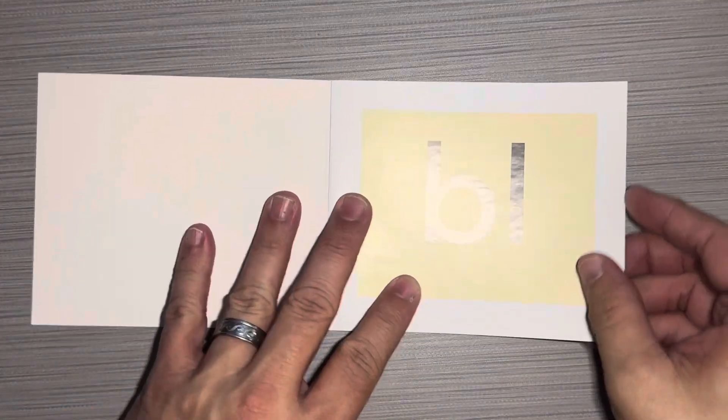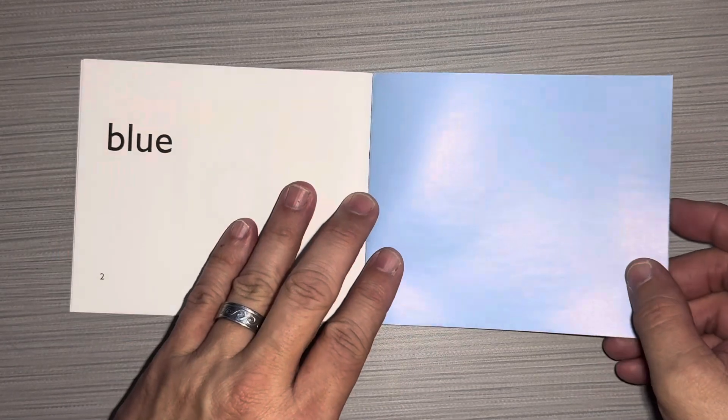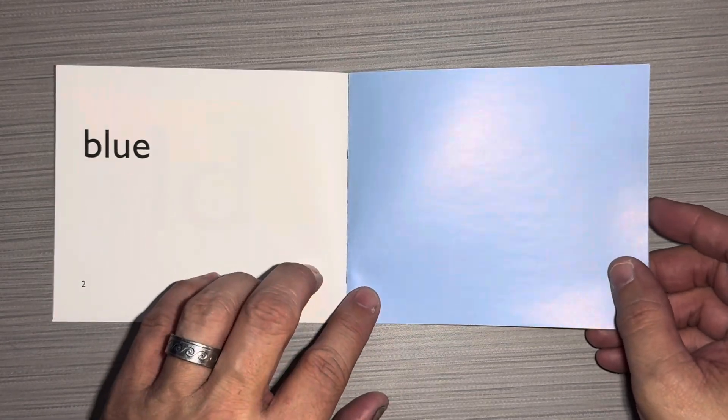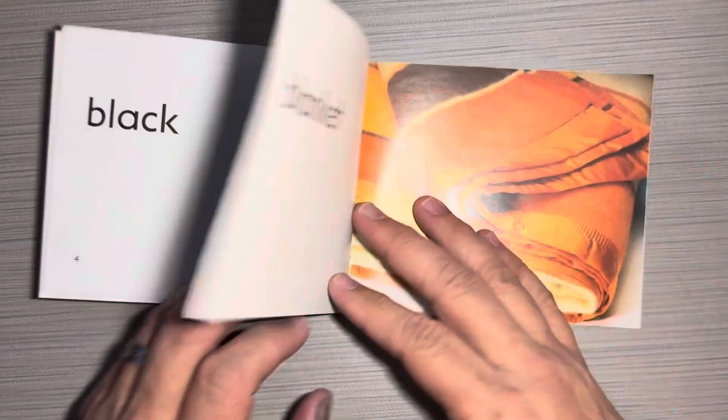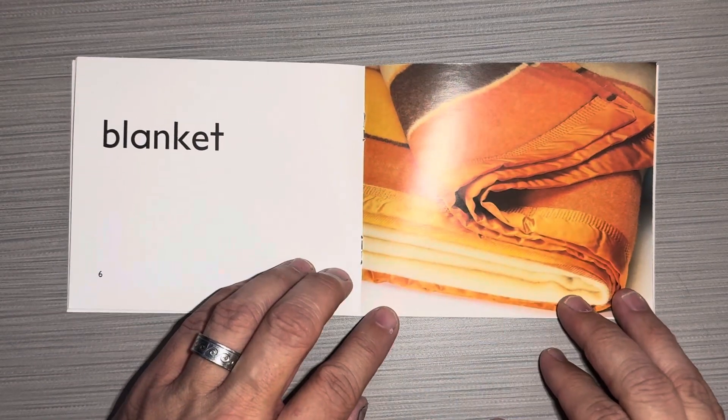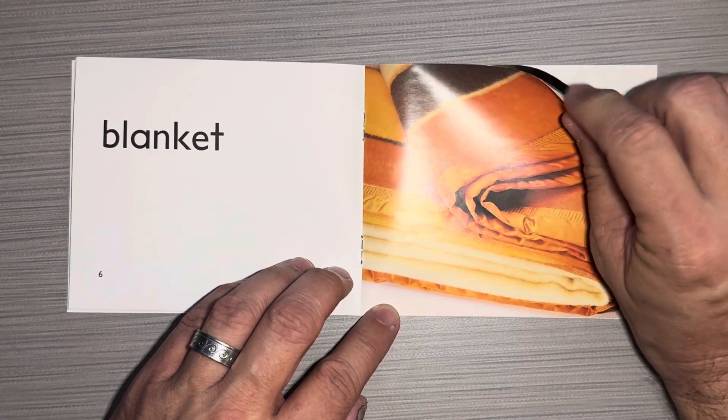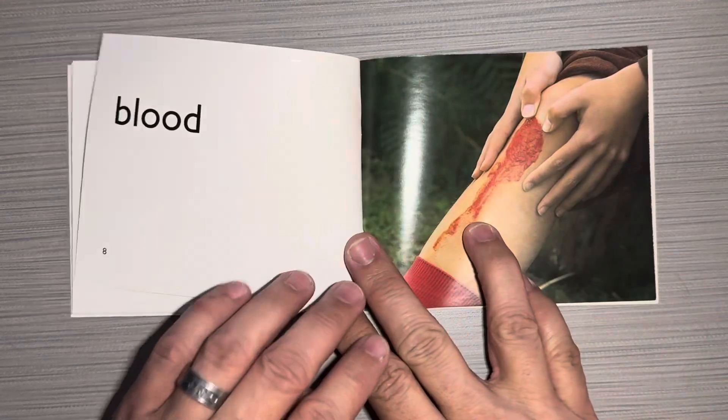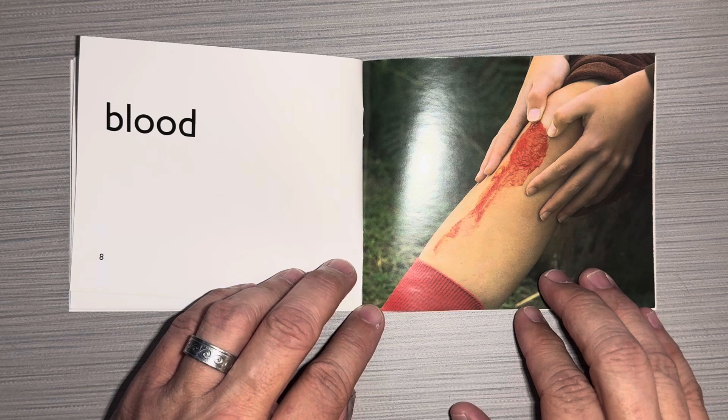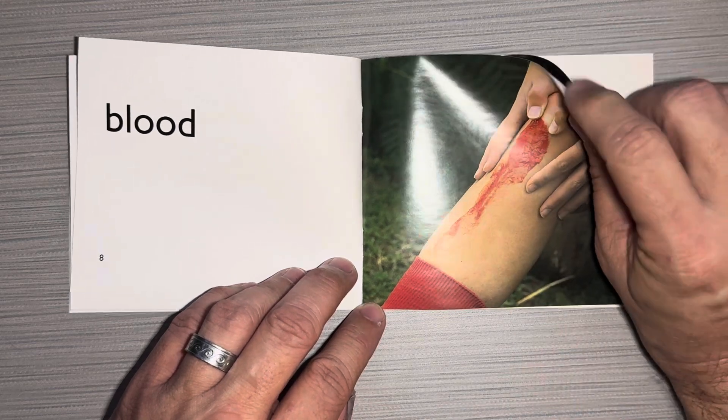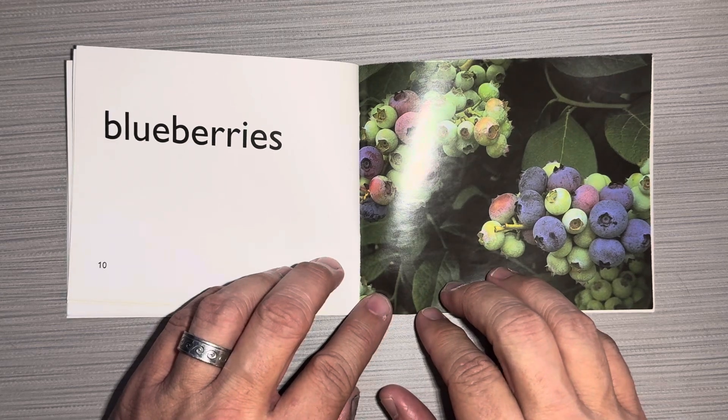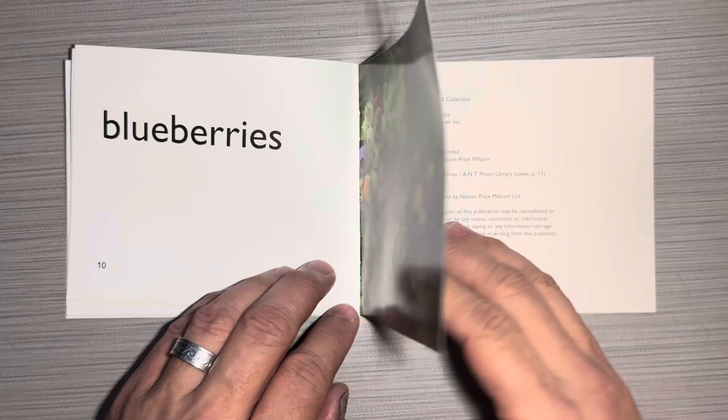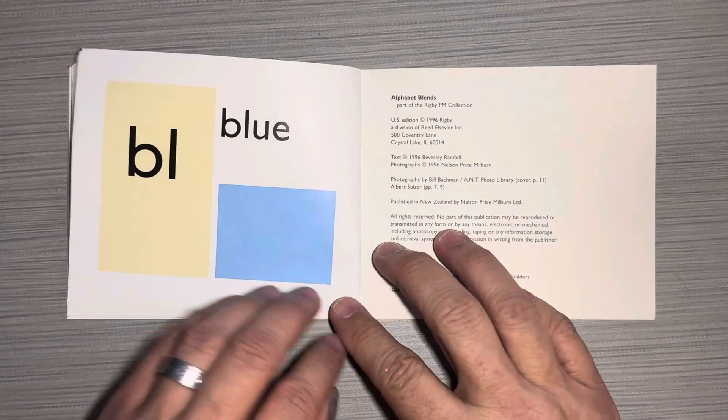Let's see what words start with the blend. Blue, black, blanket, blood, blueberries, bl, blue.